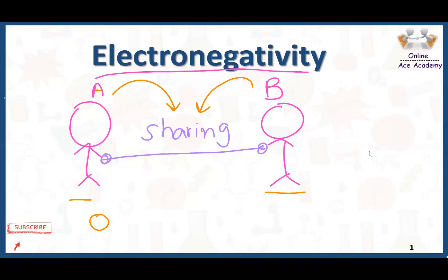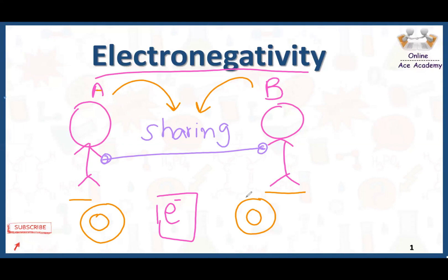Here we have atom A and on the other side atom B. Atom A and atom B have some electrons in between and both atoms are sharing these electrons. Both atoms have a nucleus which is positively charged and these electrons are negatively charged, so of course these two atoms will share these electrons.